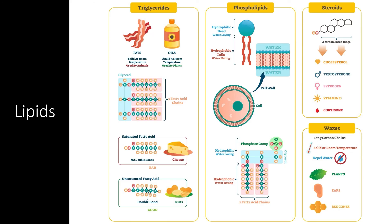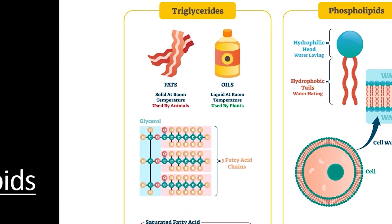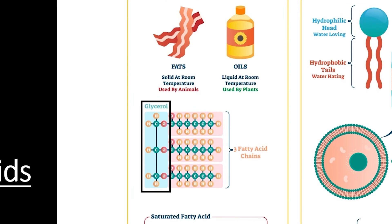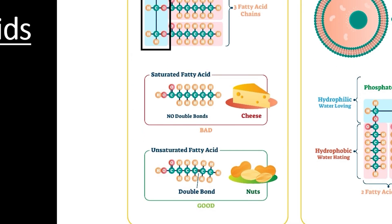The last category of macromolecules we will look at is lipids. There are three types most important to life: fats, phospholipids, and steroids. Some consider waxes their own category, though they have a structure very similar to triglycerides. Triglycerides are simply fatty acid molecules bound into a larger molecule with glycerol, a three-carbon alcohol. Fatty acids come in two forms: saturated and unsaturated.